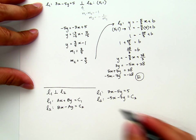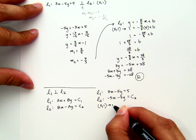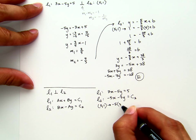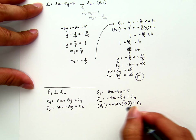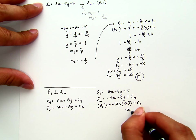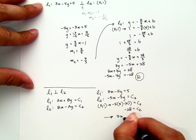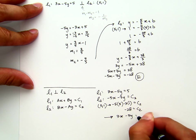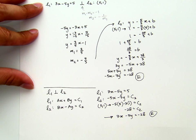Now, how to find that constant? You plug in 5, 1. And you will get negative 5 times 5 minus 3 times 1 equals another constant. This is negative 28 equals that C2. Therefore, you get negative 5X minus 3Y equals negative 28, which is E.